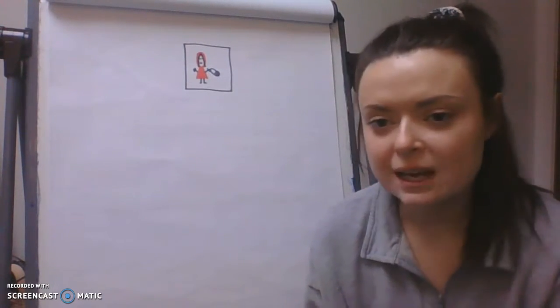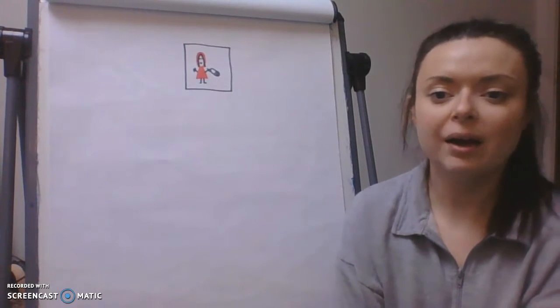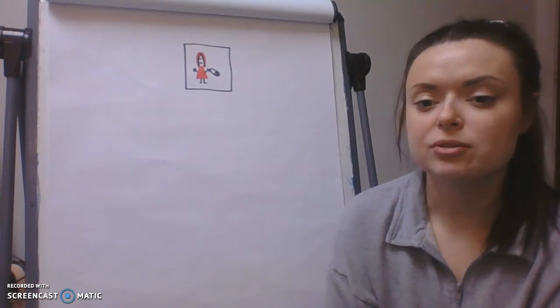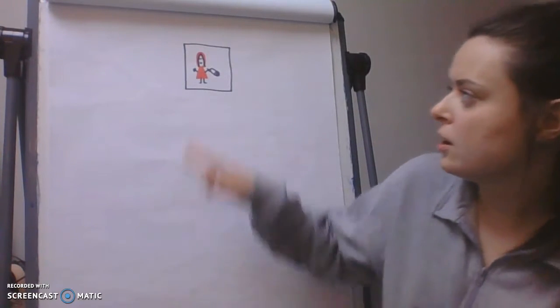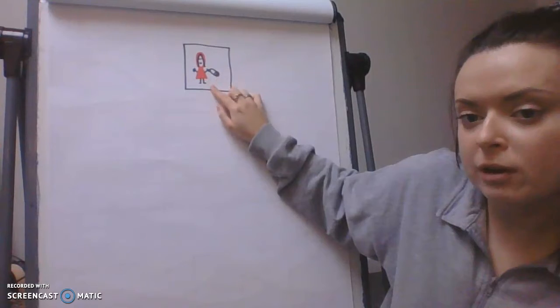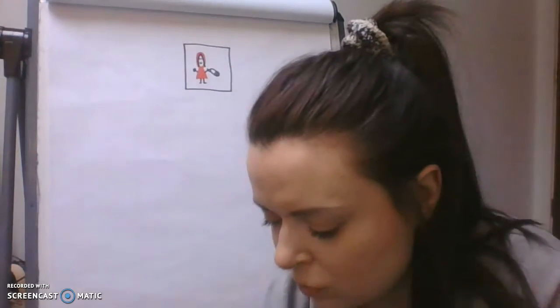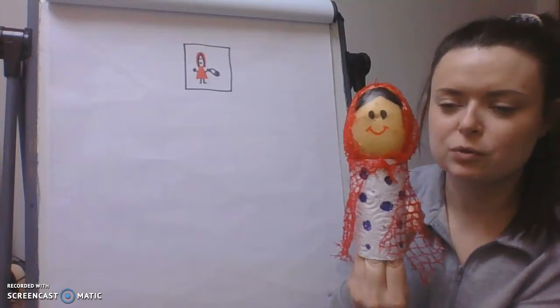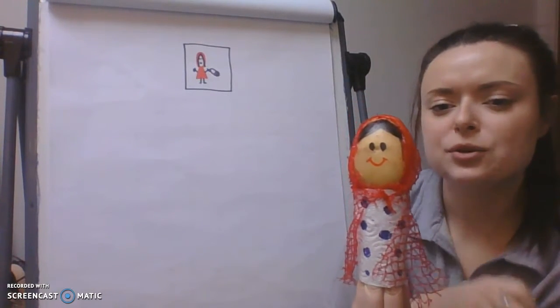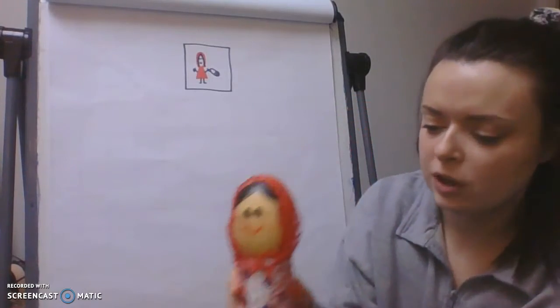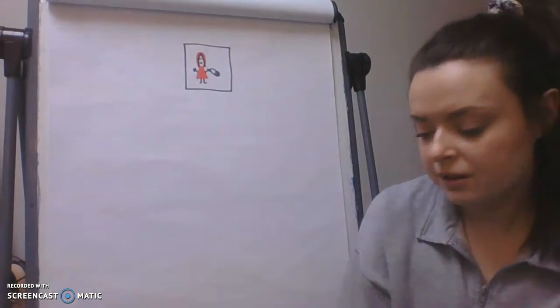Hello Year One. Welcome to today's English lesson and Happy Friday. After the weekend you will all be in class and I'm so excited. So for today's English lesson we are going to write a character description about Little Red Riding Hood. I have got my picture of Little Red Riding Hood, or as I like to call her Little Red, and you should have the same in your work pack. I've also got my Little Red character here that I made for World Book Day, made out of a potato. I like to call her Little Red Riding Spud. So let's get started with our character description.